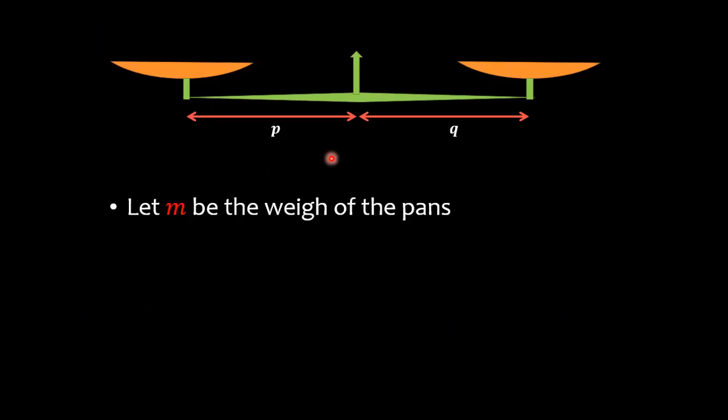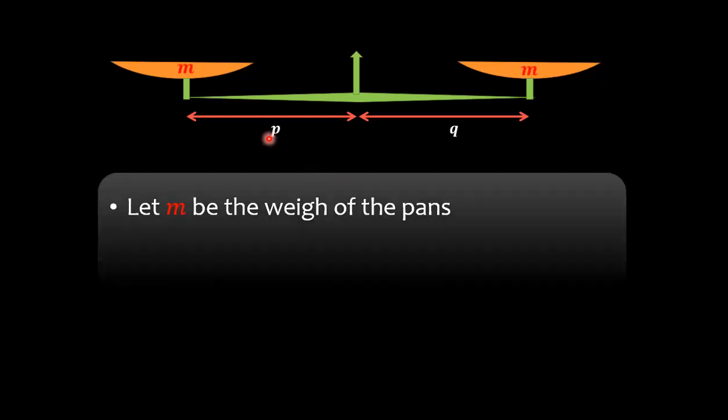We will see that. It's a pretty simple problem. So let us first consider that M be the weight of these two pans. These two pans have equal weights, but arm p is not equal to arm q.